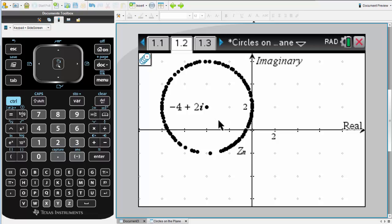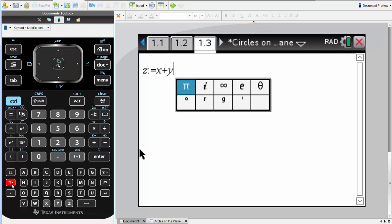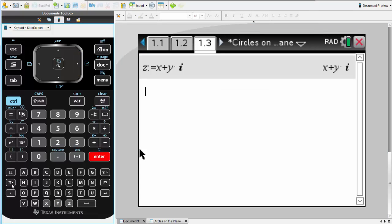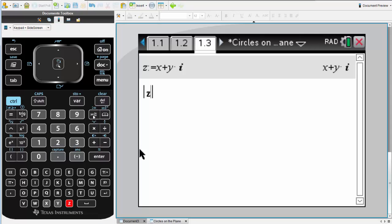Let's have a look at that problem algebraically. In the calculator application, we can define z equal to x plus y times i. Then we'll have a look at our formula as we defined before as the set of points that are 4 units away from minus 4 plus 2i.